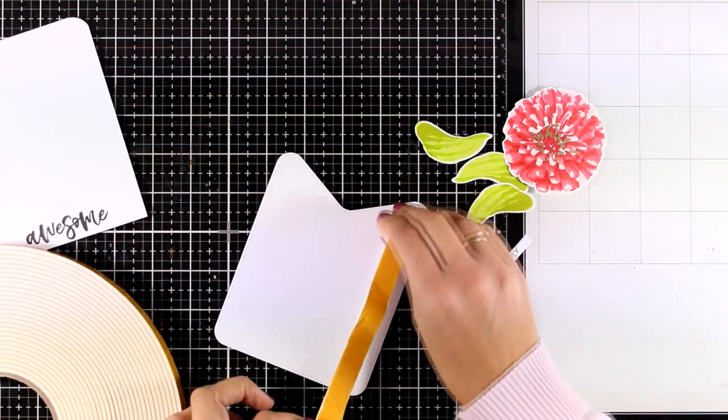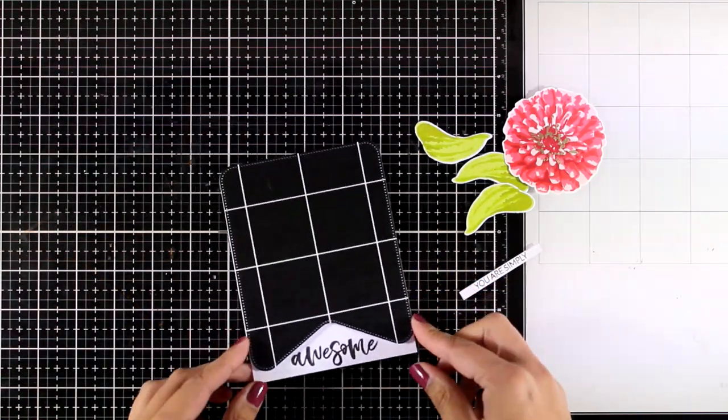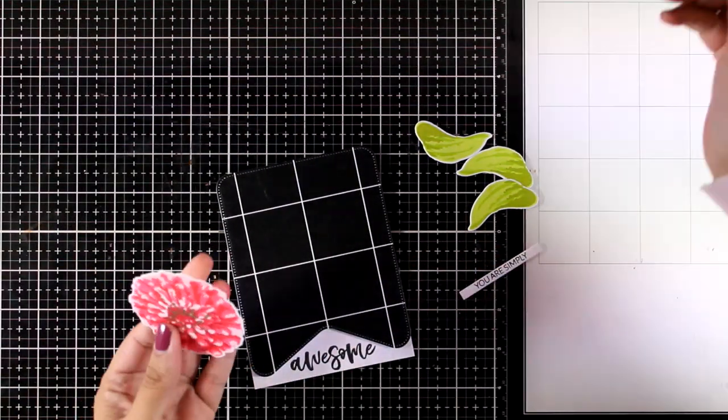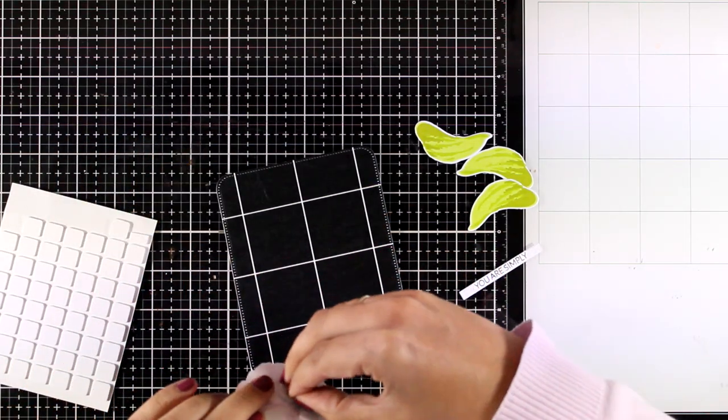You can always use your scissors and cut off the excess. At the back, I'm using some foam tape so I have some dimension between my card base and that big banner. I'm also going to use foam squares at the back of my big flower.